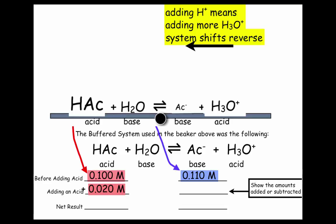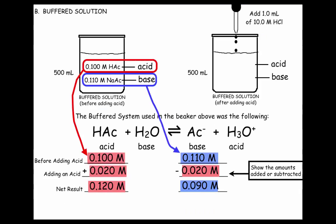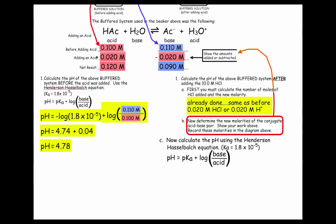So the net result is 0.120 molar and 0.090 molar. We plug those two values in our diagram, because that's what the acid and base concentrations are now, after the acid was added. And now we're ready to do the calculation. So the pH equals the pKa, which is the negative log of this, plus the log of the base over the acid.